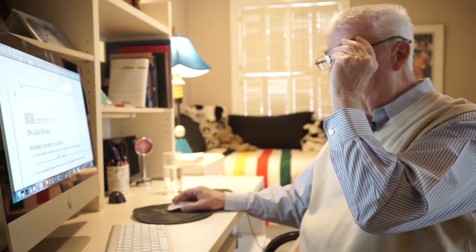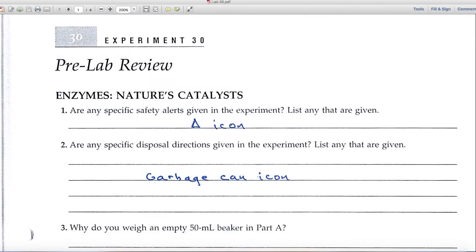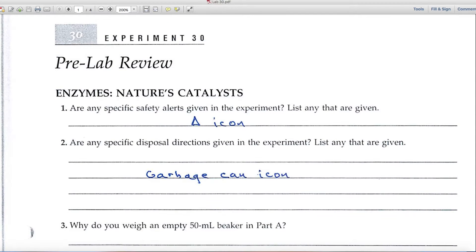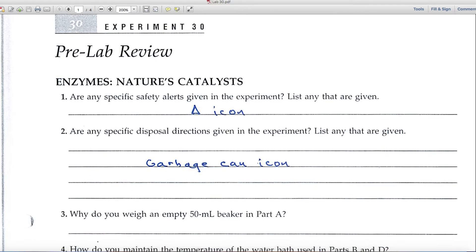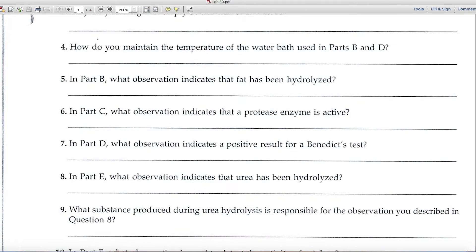Experiment 30 deals with enzymes: nature's catalysts. Let's look at the pre-lab review page. Question number one: specific safety alerts – look for the triangle icon. Number two: disposal directions – look for the garbage can icon. Then several questions are based upon the reading, the introduction to the experiment.